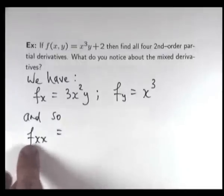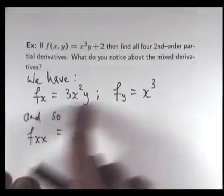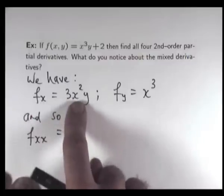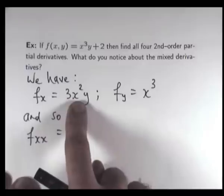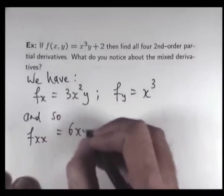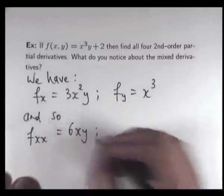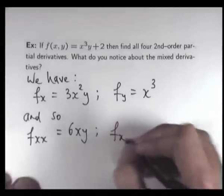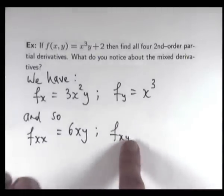So let's calculate our second-order partials. To get f sub xx, we go up here, differentiate with respect to x while keeping y as a constant. So this is going to become 6xy.